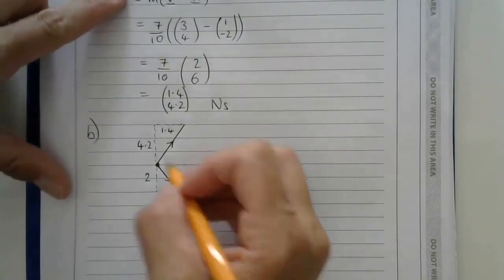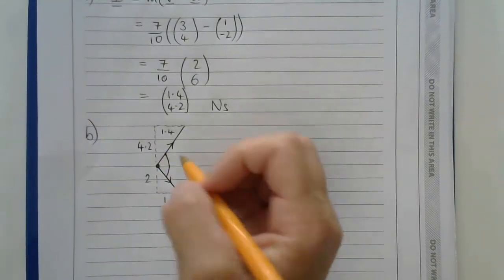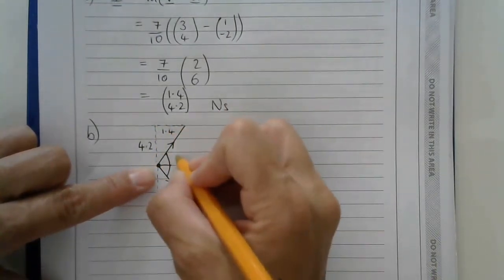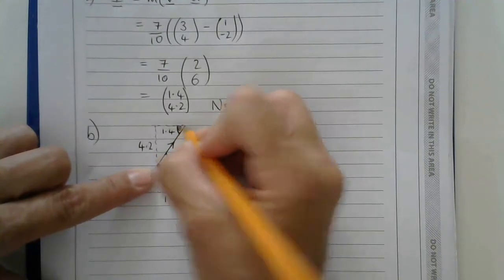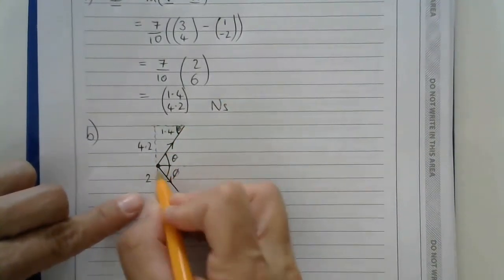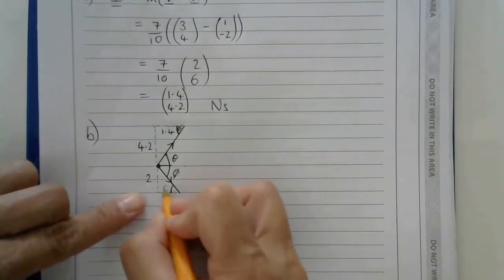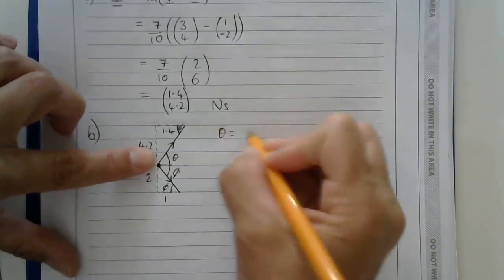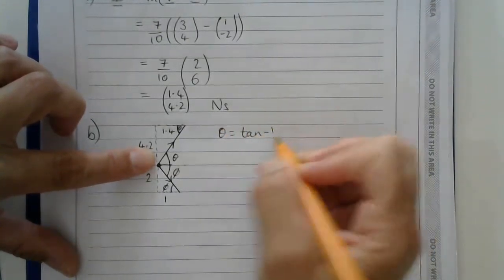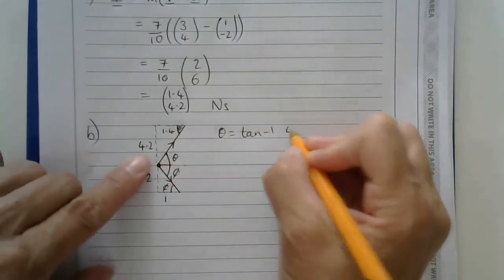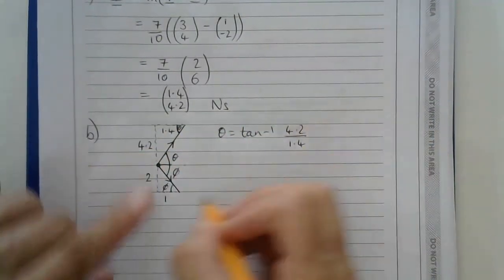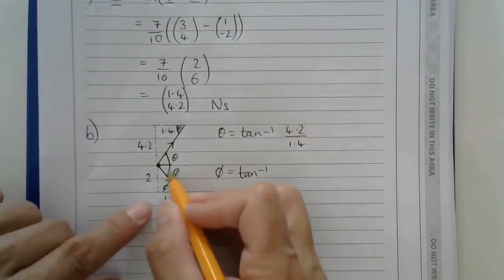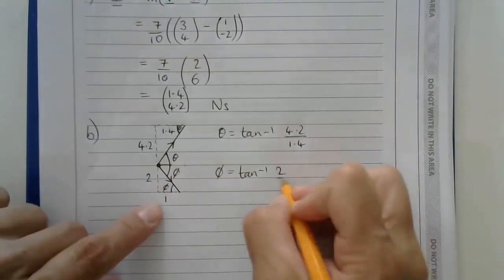So this length here is 4.2 in the j direction and this length here is 1.4 in the i direction. And so I'm asked for the angle here. If I imagine a z here, this part of the angle will be the same as this angle here and this part of the angle using again another z will be this angle here. To work out θ then I will do inverse tan of the opposite over the adjacent, and to get this angle here I'll do inverse tan of again the opposite over adjacent, so the opposite this time is 2 over 1.